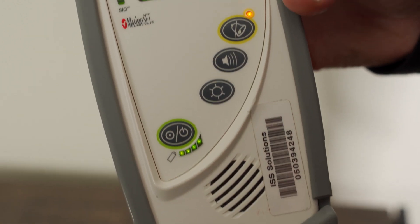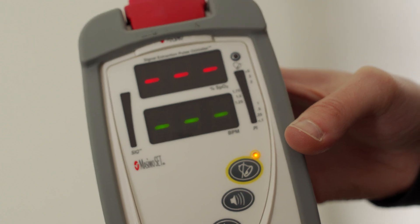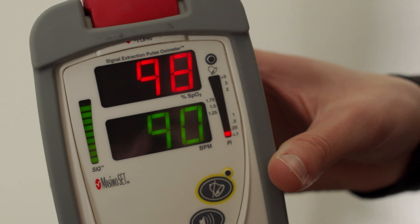You turn the power on by pushing this button here at the bottom. After a few moments, the numbers will appear. The number on the top is the percent SpO2, and the number on the bottom is the heart rate.